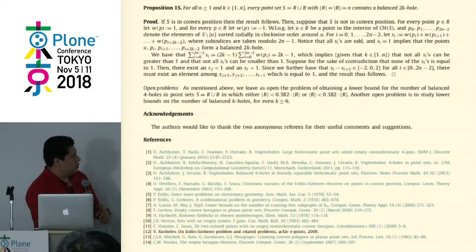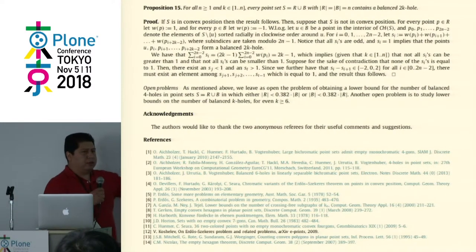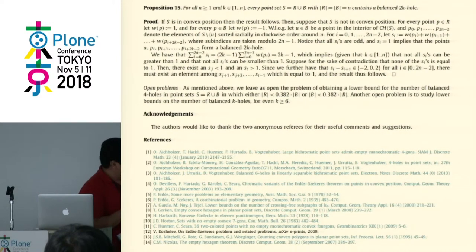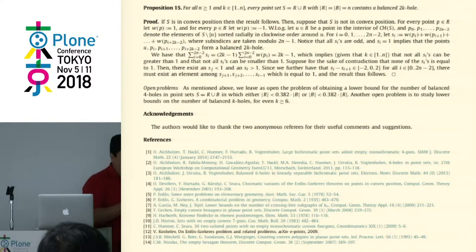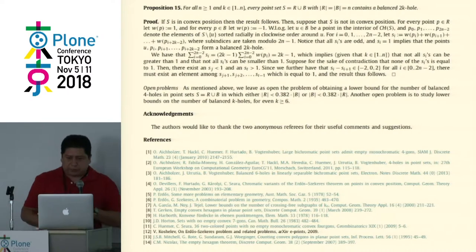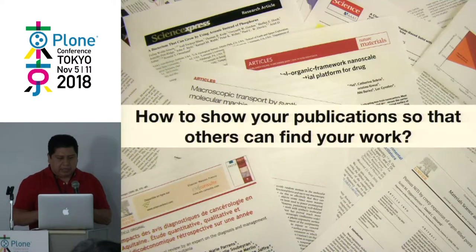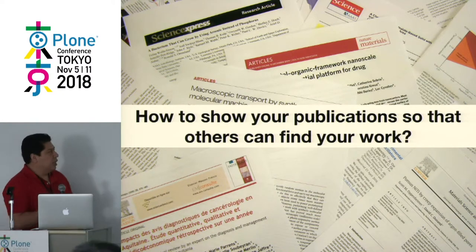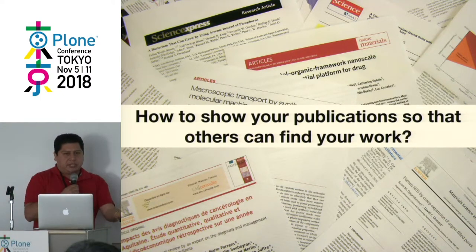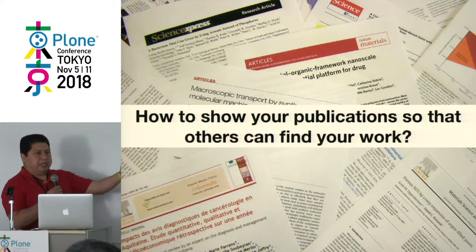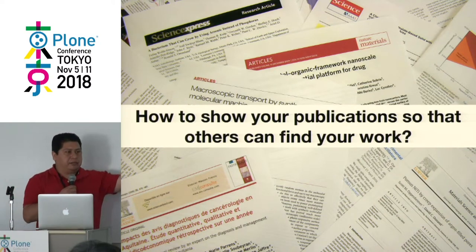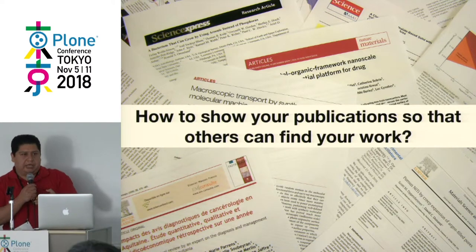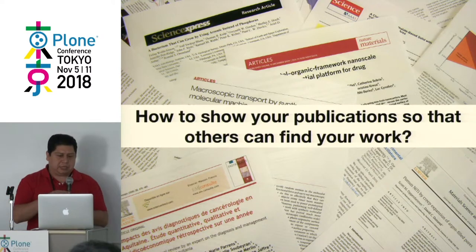BibTeX is very important because when somebody references work of other people, they use lists like those, and depending on the journal publishing the work, the format differs. Now, the problem we face is: now that the internet is everywhere, how can a mathematician show all their publications so other people can find their work? For example, how can students from other countries find what mathematicians in Mexico are doing and decide if they want to work with them?